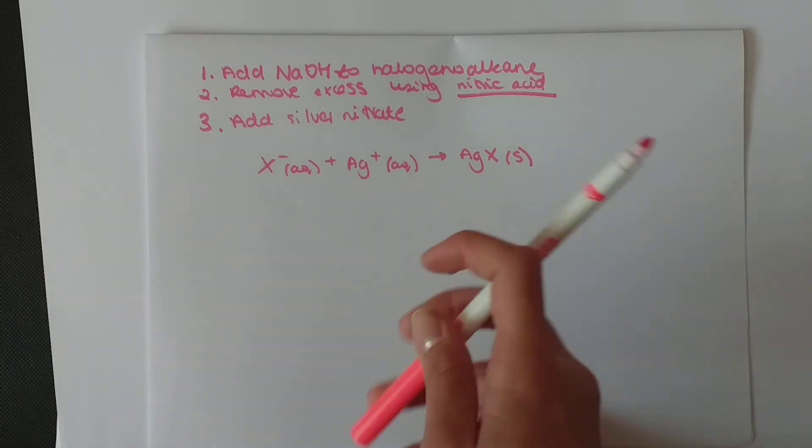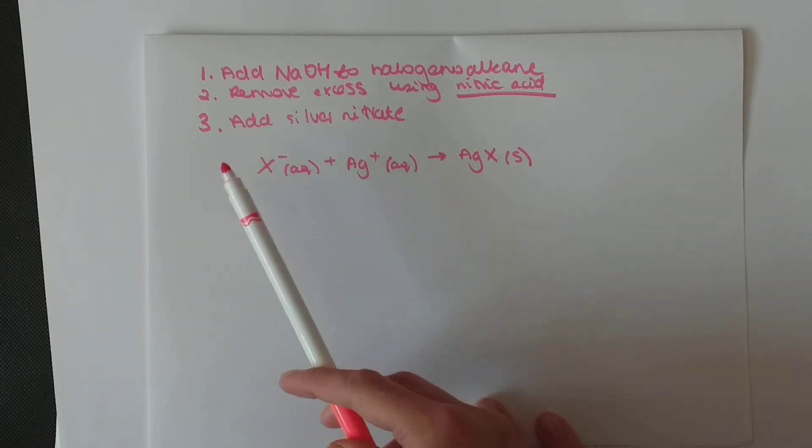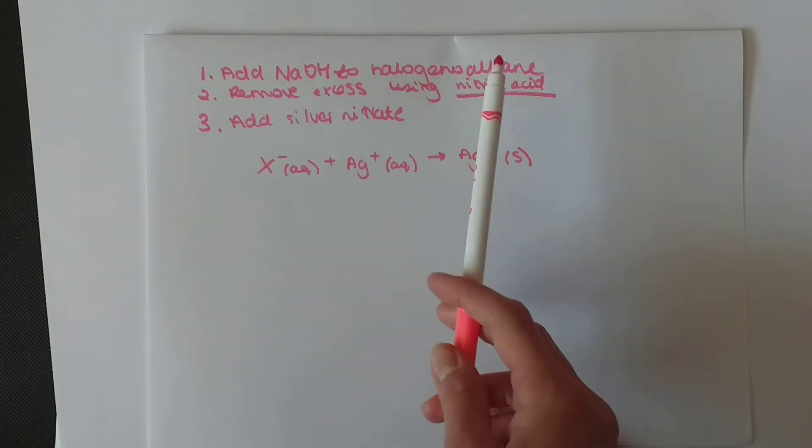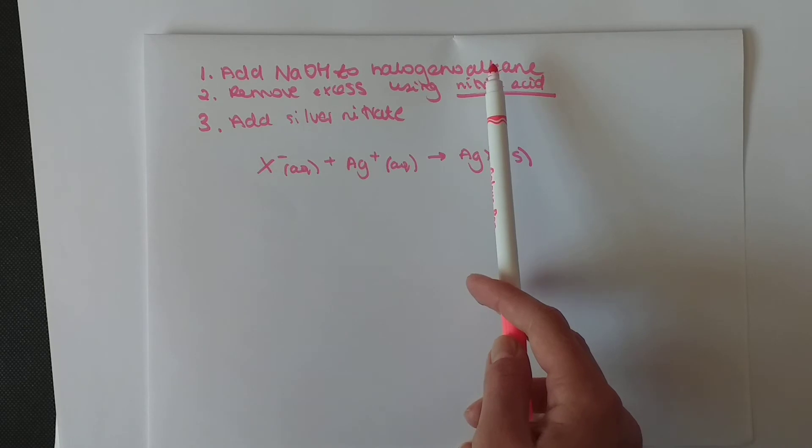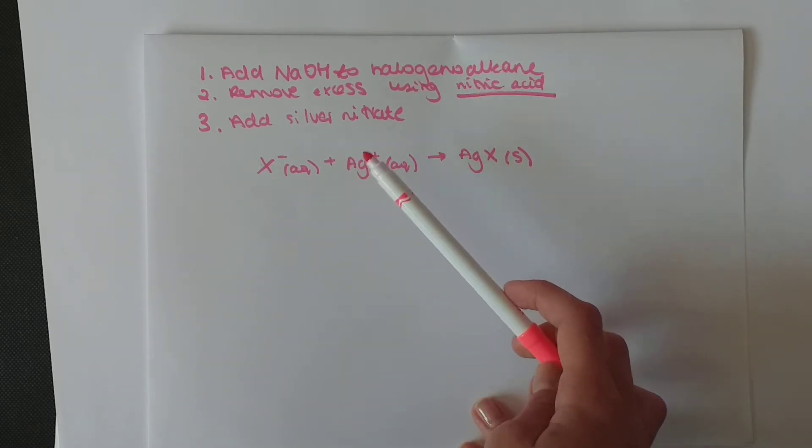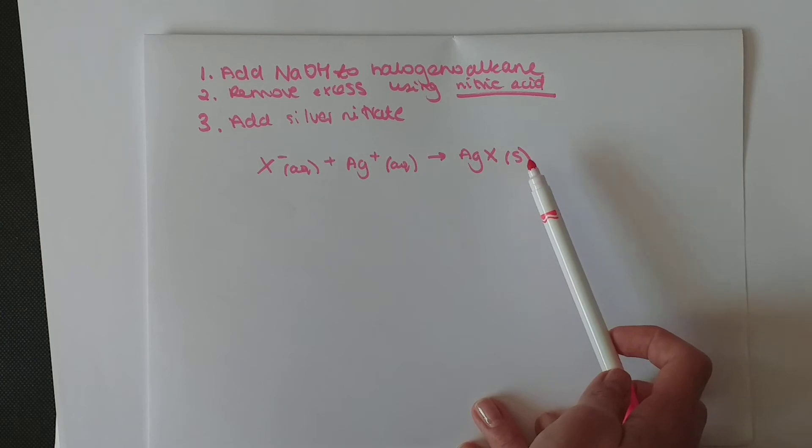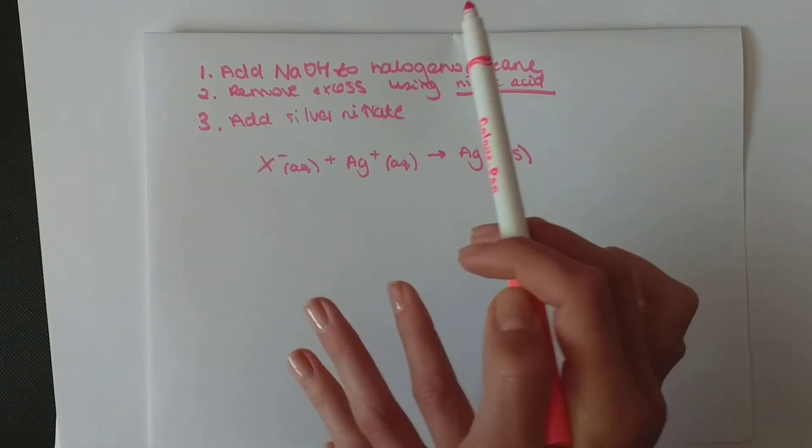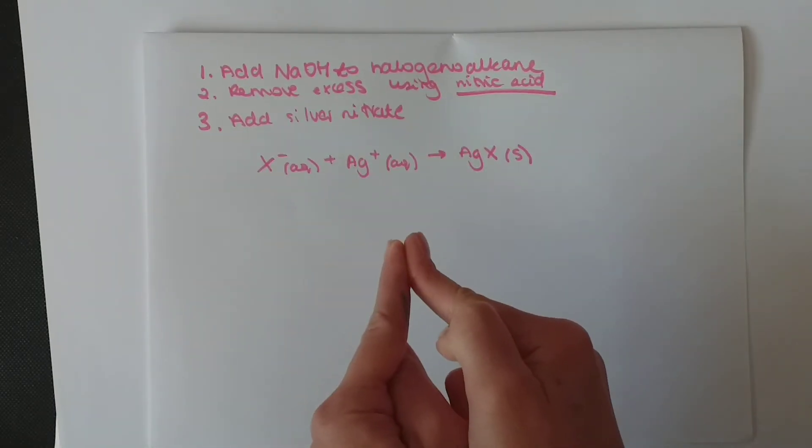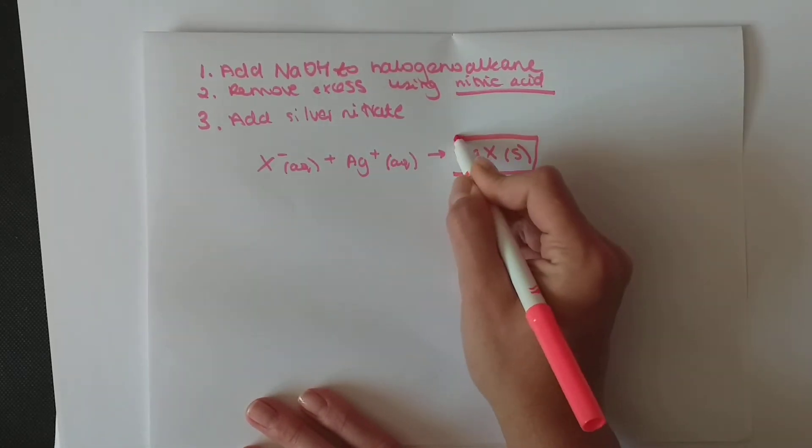Silver nitrate will show you what halogen alkane it is. This is the overall equation. We have a chlorine, bromine or iodine which we got as a product from the reaction with sodium hydroxide. We add our silver ions, minus and a plus, they join together to form a solid. This solid means we got a precipitate because they were both aqueous, in solution. When they join together, they become solid, they precipitate out.